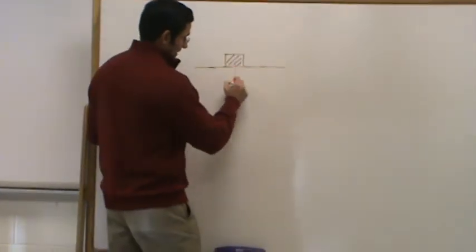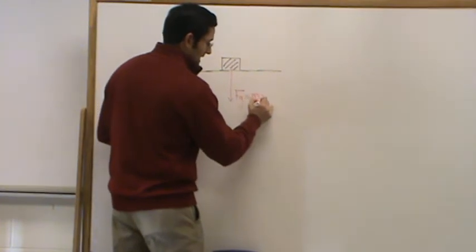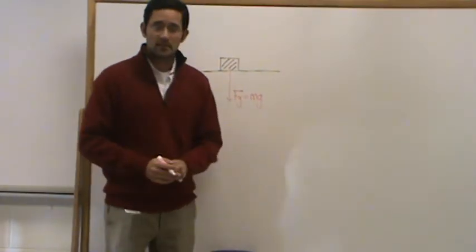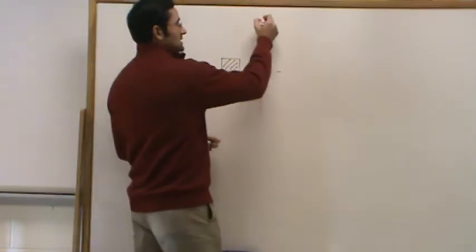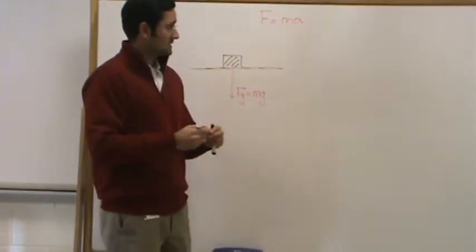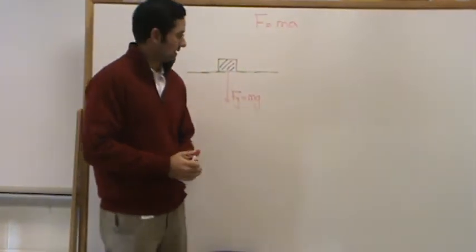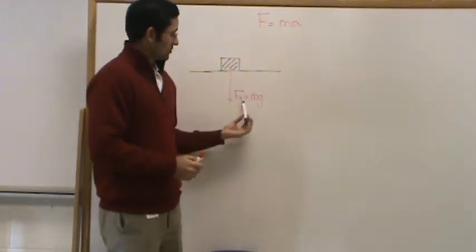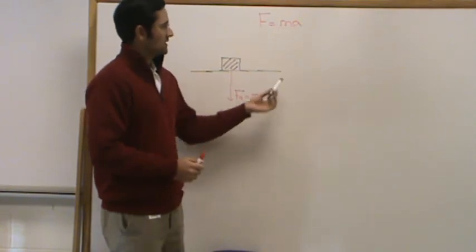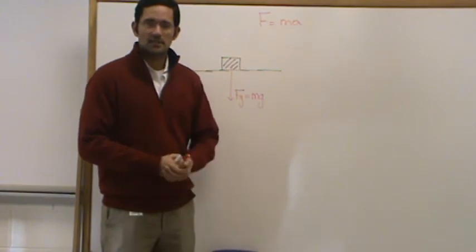The force of gravity is always pointing downwards, and it's calculated just like any other force: mass times acceleration. Newton's second law says F = MA, where force is in Newtons, mass is in kilograms, and acceleration is in meters per second squared. For the force of gravity, we substitute a small g instead of A, because g is the specific acceleration of gravity — that's where your 9.8 or 10 meters per second squared comes in.